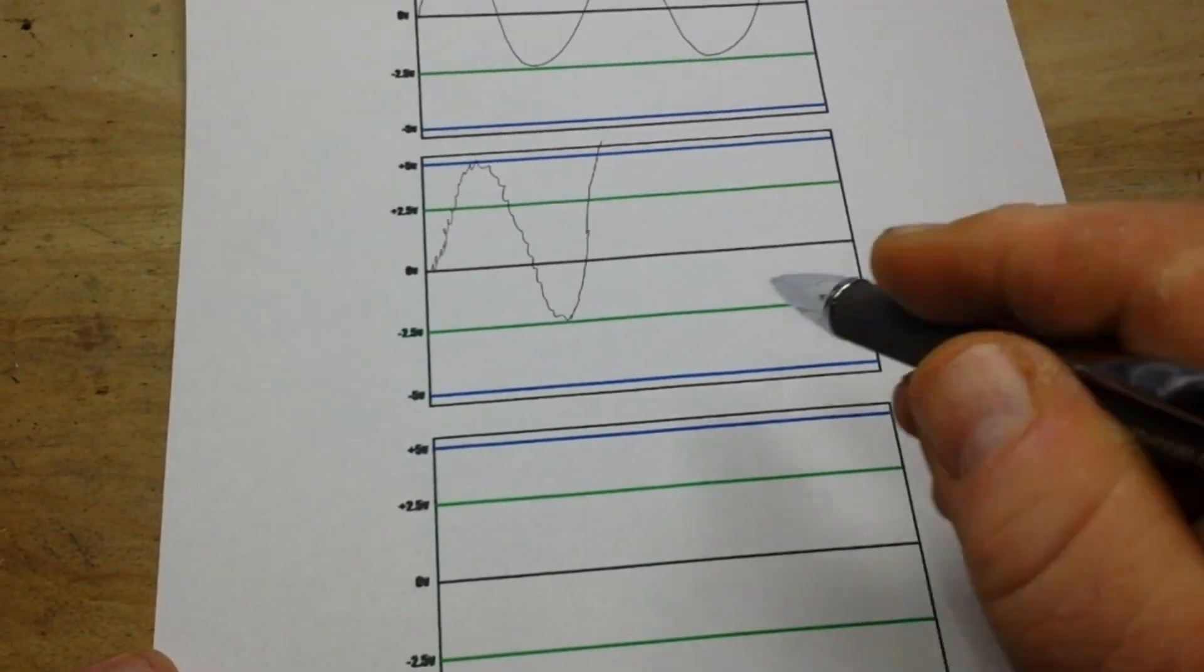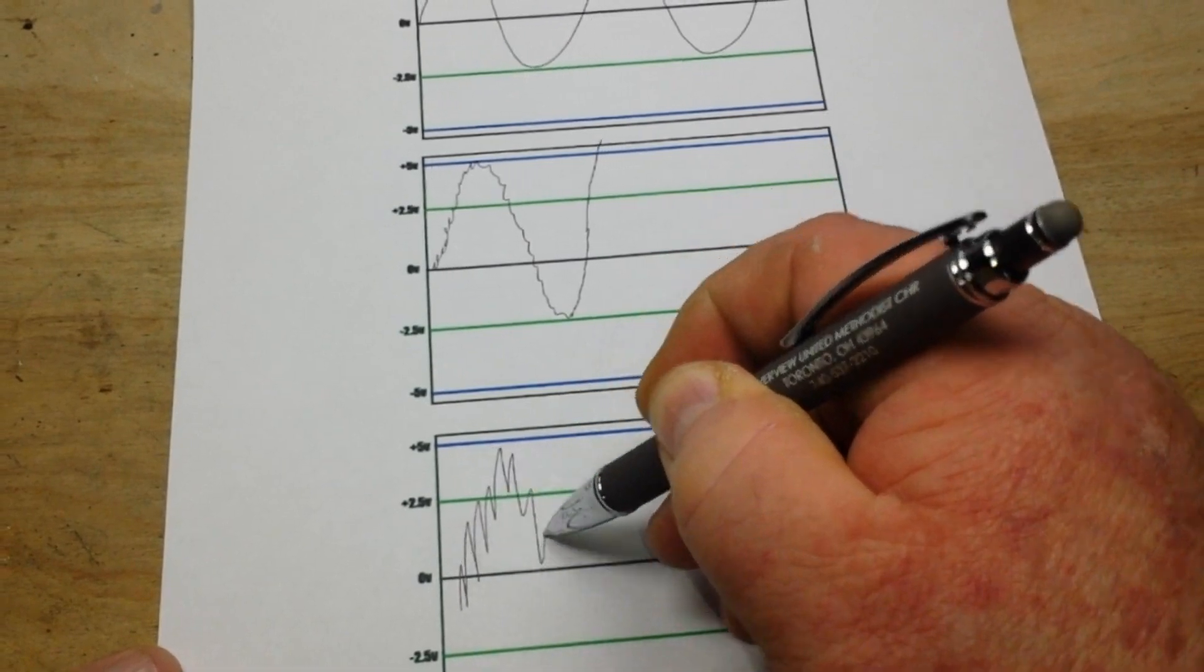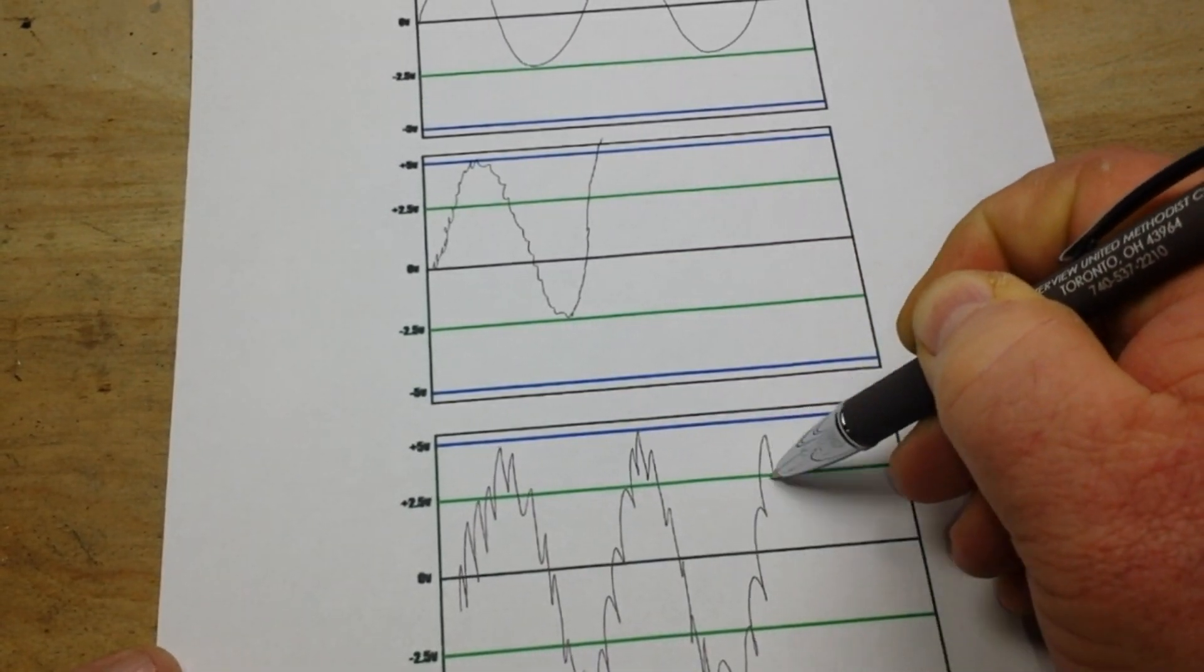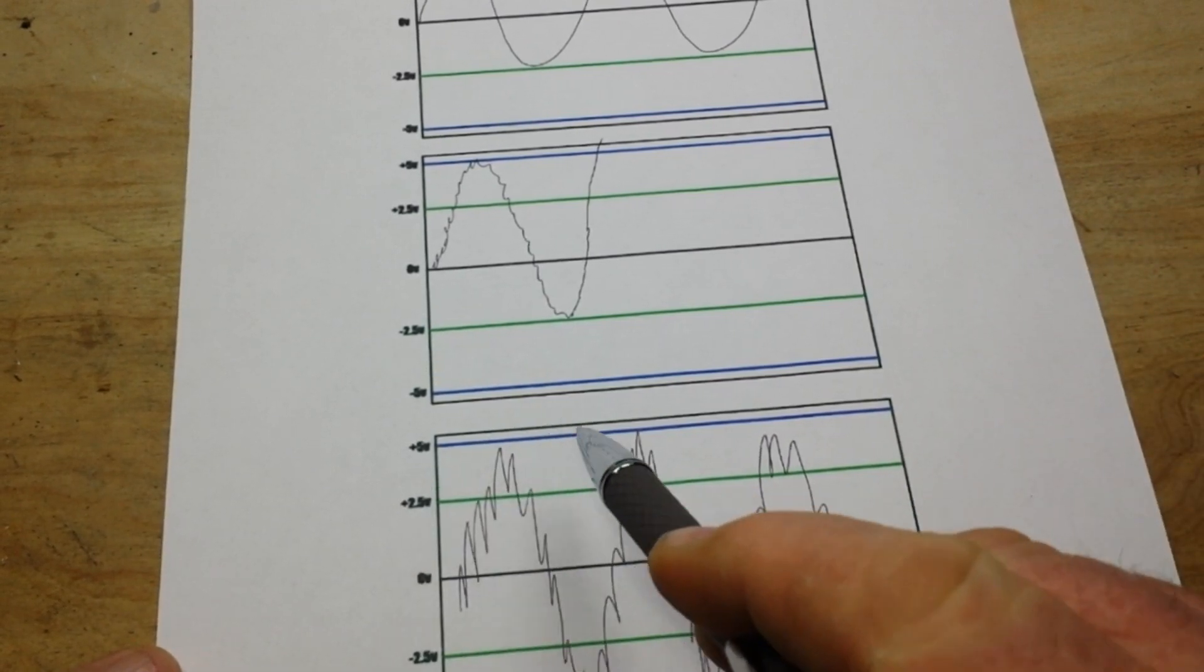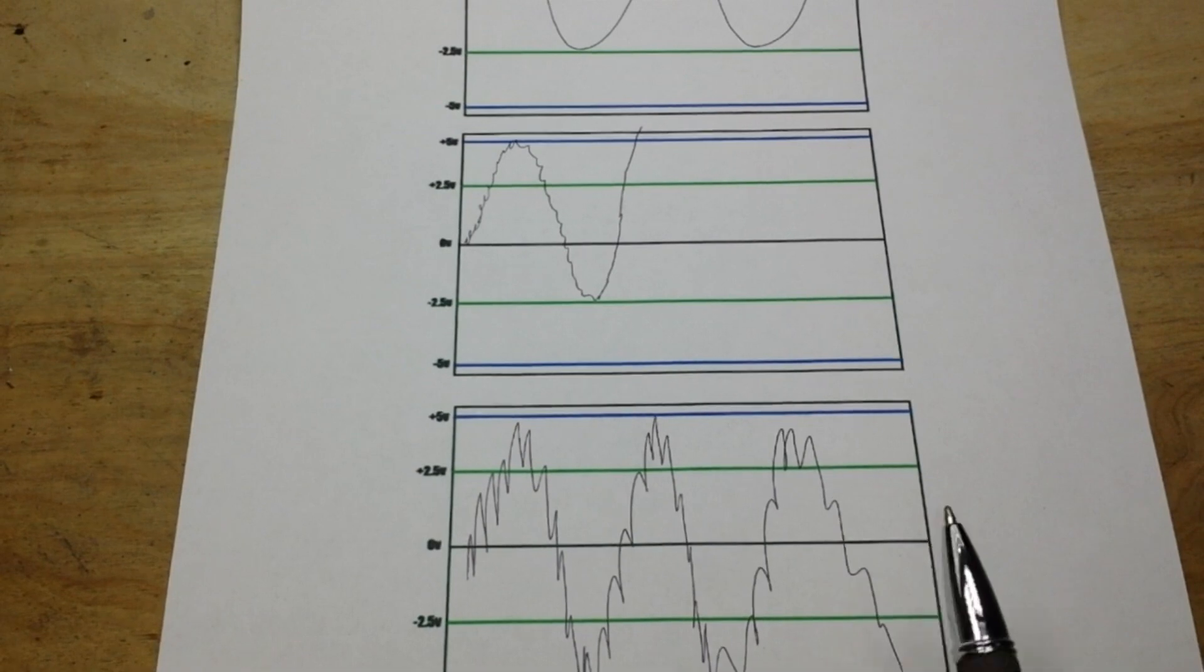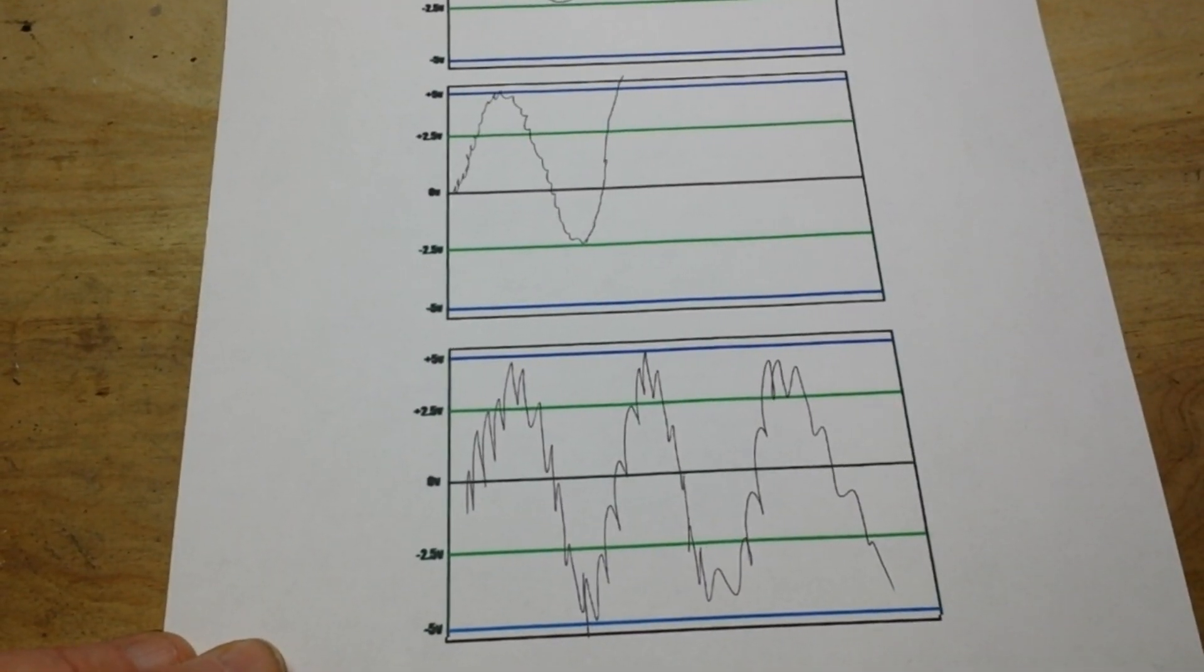And as the noise increases, your signal can look like this. You can still see the sine wave pattern, but there is so much noise there that you can't distinguish what's going on.